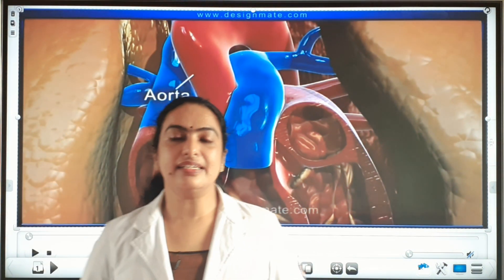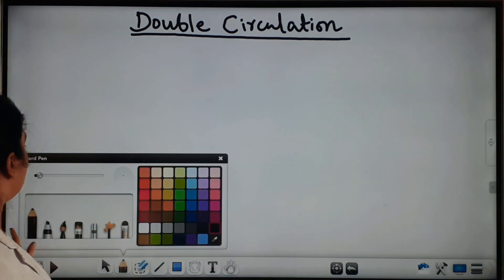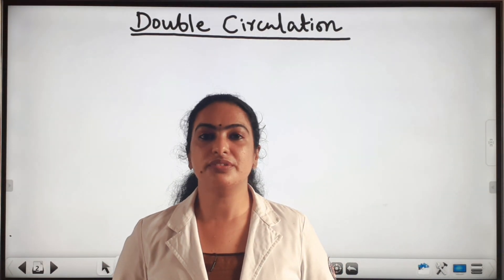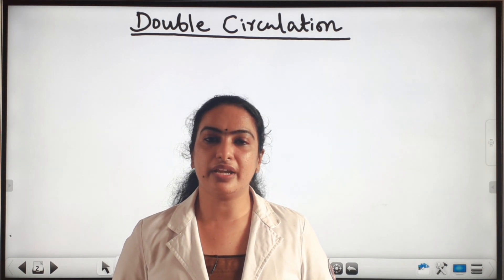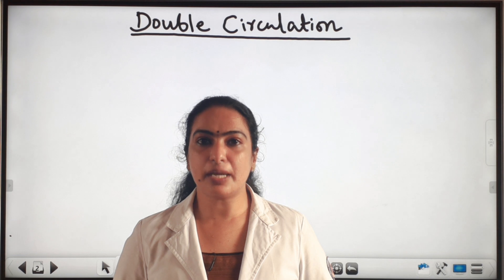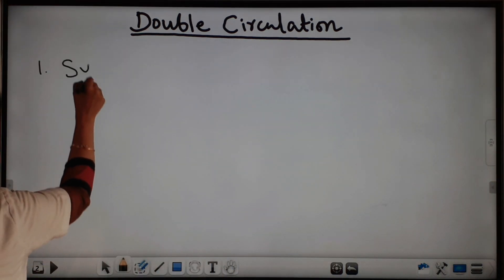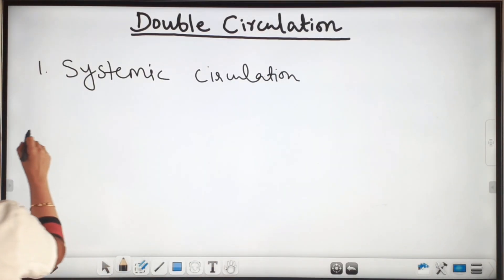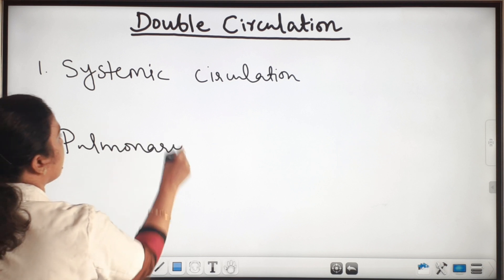Now we can see double circulation in human heart. In the case of the human heart, the blood circulates or travels through the heart twice in one complete cycle, so it is known as double circulation. The double circulation involves two steps: the first step is systemic circulation, and the second is pulmonary circulation.